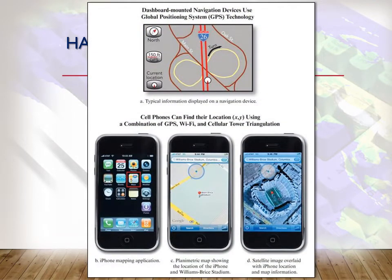Another way you may have used GIS and didn't even realize it is with your smartphone. Smartphones have GPS capability, and with mapping in your mobile phone, you can actually see maps and you can see yourself moving with the map. That's just a very loose but extremely common example of a GIS.